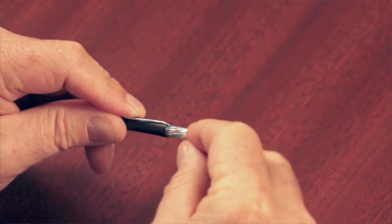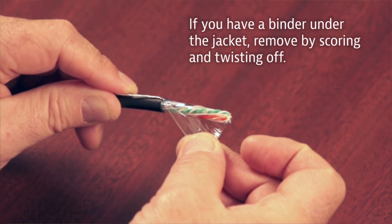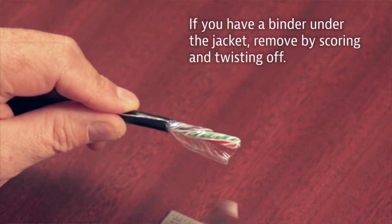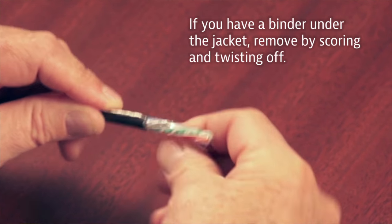Most Category 6 shielded cables are going to have a secondary binder underneath the jacket made of polyester, a clear tape. You want to remove this. Score the clear tape right down by the edge, making sure not to damage your conductors. Rotate that off and discard it.